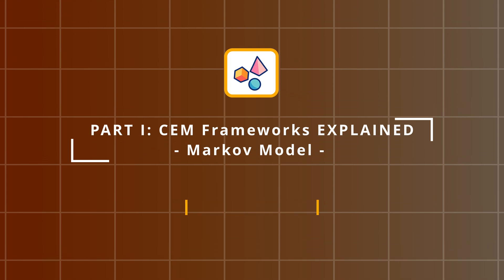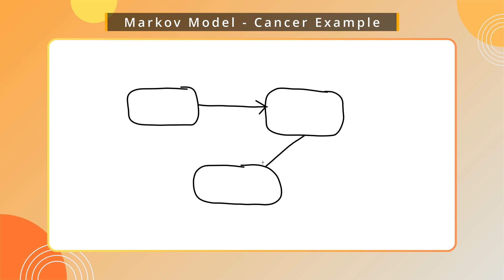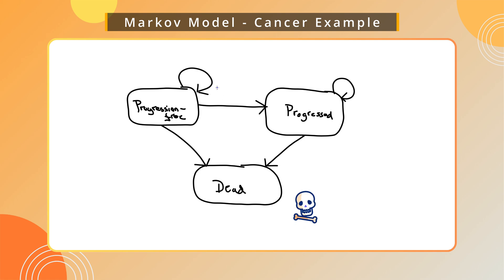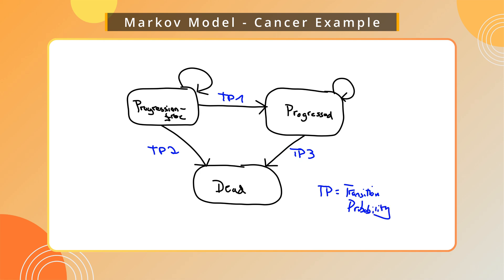Another frequently used analytical framework for decision making is the Markov model, which is probably the most common type of all of the CEMs. To stick with our cancer example, a Markov model allows us to use the same three distinct health states we've used in our PSM, only that this time the number of people at any point in time is dictated by transition probabilities rather than using the area under the curve. These transition probabilities are visualized using arrows between health states, whereby the round arrows represent the probability of remaining in the same health state. As a patient's condition changes over time they move or transition between health states, while time is reflected via discrete time periods called cycles that are usually set to a certain number of weeks or months depending on the natural history of the disease, treatment intervals and data availability.